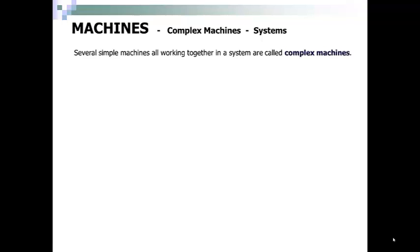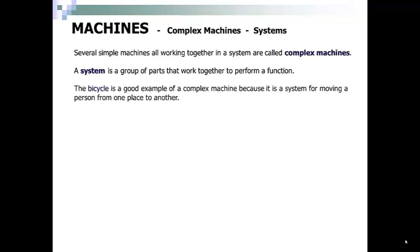Several simple machines all working together are called complex machines. A system is a group of parts that work together to perform a function. A bicycle is a good example of a complex machine because it is a system for moving a person from one place to another.